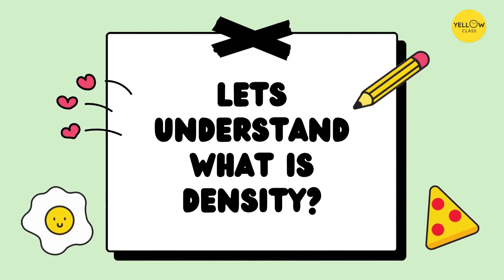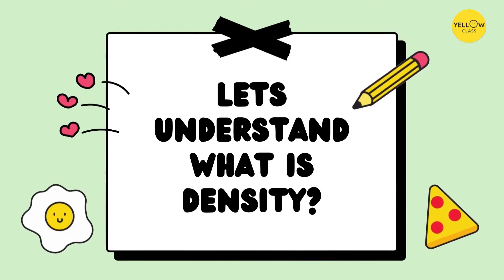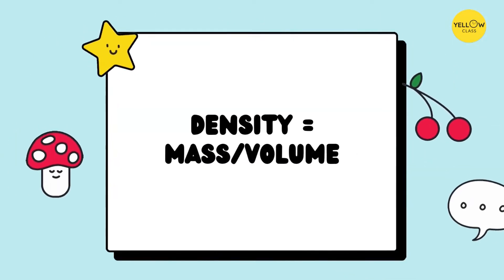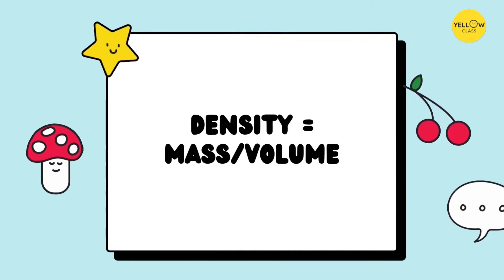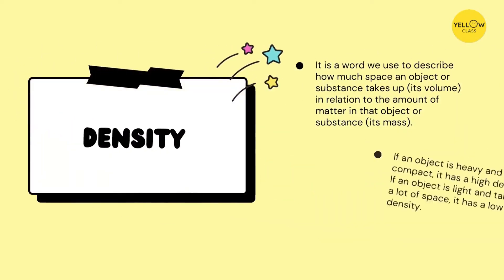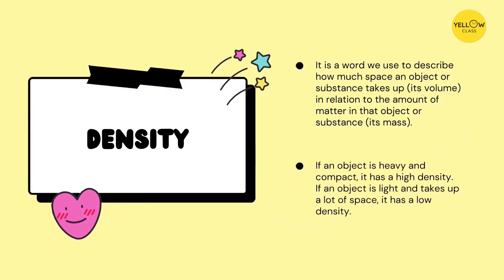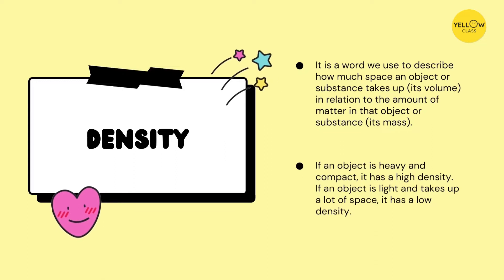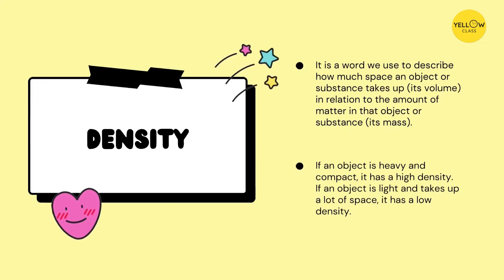Let's understand what density is. Density is mass divided by volume. Density is a word we use to describe how much space an object or substance takes up in relation to the amount of matter in it. If an object is heavy and compact, it has a high density. If an object is light and takes up a lot of space, it has a low density.